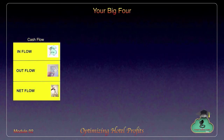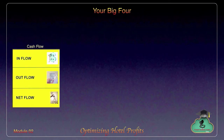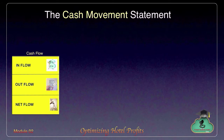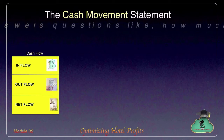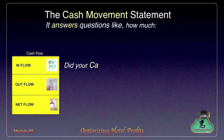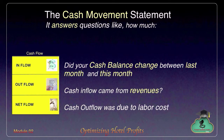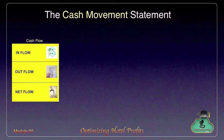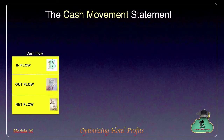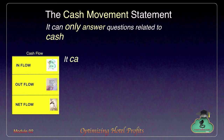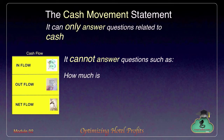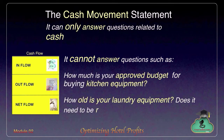The third character in our story is the cash flow statement, called the cash movement statement. It answers how much did the cash balances change between previous and current period — how much was the inflow, outflow, and net flow. However, the cash flow statement has a shortcoming: it is able to give you information only related to cash. For example, if you needed to know whether you had an approved budget for buying kitchen equipment or whether your laundry equipment needed to be replaced, the cash flow statement is unable to assist.